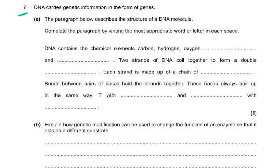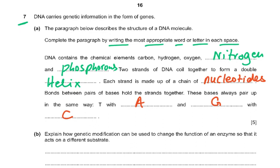Question 7: DNA carries genetic information in the form of genes. Complete the paragraph about DNA structure. DNA contains the chemical elements carbon, hydrogen, oxygen, nitrogen, and phosphorus. Two strands of DNA are coiled together to form a double helix. Each strand is made up of a chain of nucleotides. Bonds between pairs of bases hold the strands together, and these bases always pair up in the same way: T with A, and G with C.